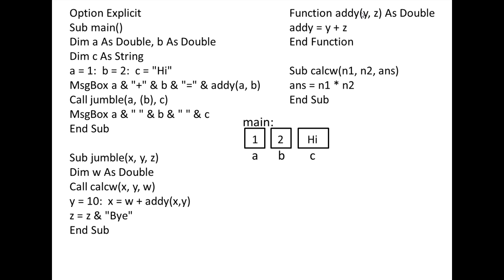In ADDIE, the variables Y and Z are automatically created and given a double data type because A and B in main are double variables. The variable A in main is linked with the variable Y in ADDIE, and the value of Y is initialized to 1. The variable B in main is linked to Z in ADDIE, and the value of Z is initialized to 2. Y plus Z is calculated and assigned to ADDIE, so ADDIE now has the value 3. The function procedure ADDIE is terminated with the end function statement. The values of A and B in main do not change because the values of Y and Z in ADDIE were not updated. The value of ADDIE is returned to main where it is invoked, and the variables Y and Z in ADDIE are terminated.